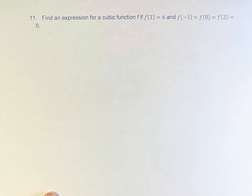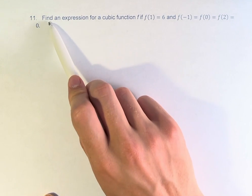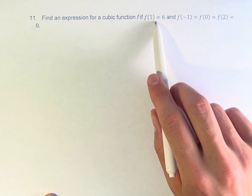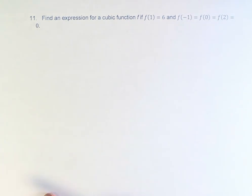Hello, and welcome back to another video. In this problem, we're asked to find an expression for a cubic function f if f of 1 equals 6, and f of negative 1, f of 0, and f of 2 are equal to 0.